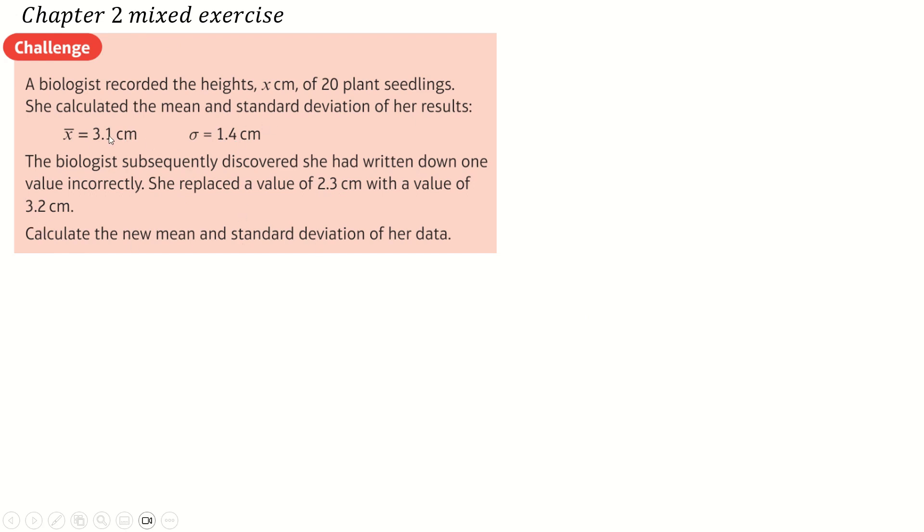So we can find out the total of all the data by doing 20 times 3.1, which is 62. If we remove the wrong piece of data 2.3 and add in the correct piece, we'll get a difference of 0.9. So we get an increase of 0.9, divide that by 20, and that finds our new mean.